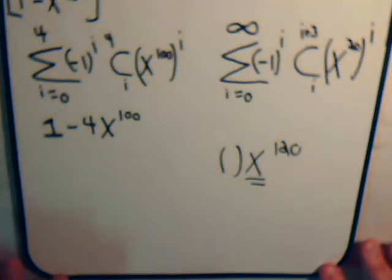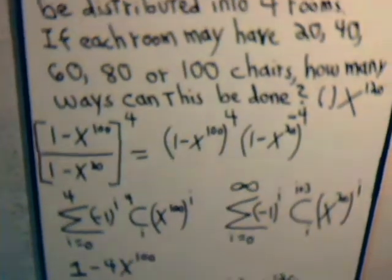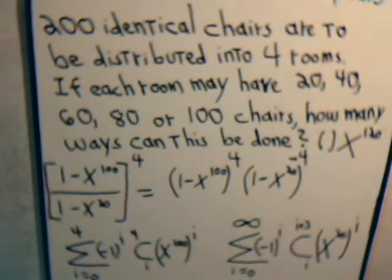Okay, in the very last video we were trying to tackle this problem here. We said we have 200 identical chairs that could be distributed into four rooms so that each room may have 20, 40, 60, 80, or 100 chairs. If we do it like that, how many ways can this be done?